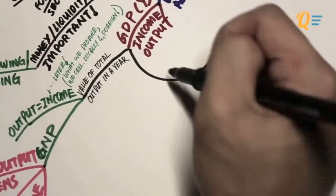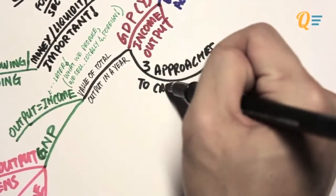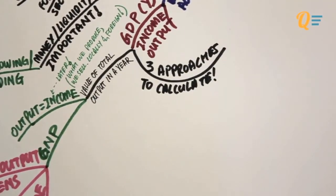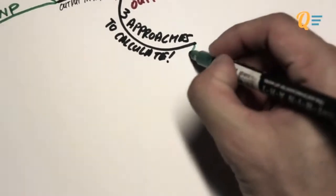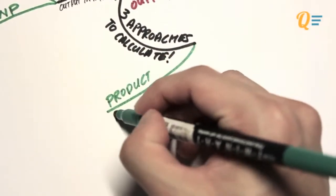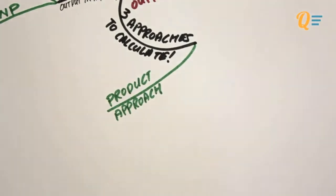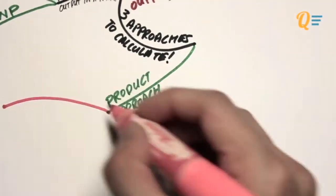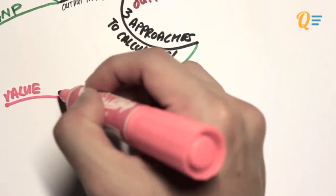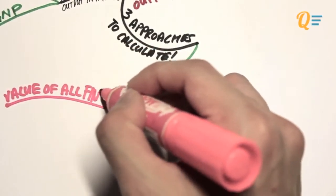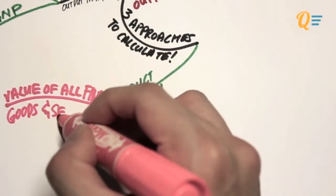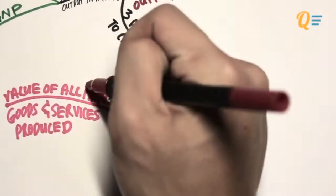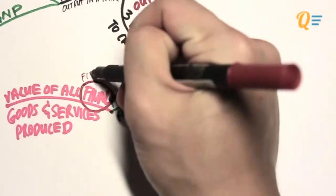Our focus is still going to be on GDP, and we're going to learn three approaches to calculate the value of GDP. Two of them are not going to be used for the syllabus, so we're going through them for your general knowledge. The first approach is known as the product approach, which involves adding up the values of all the final goods and services produced by the economy. The key word here is the word 'final'.